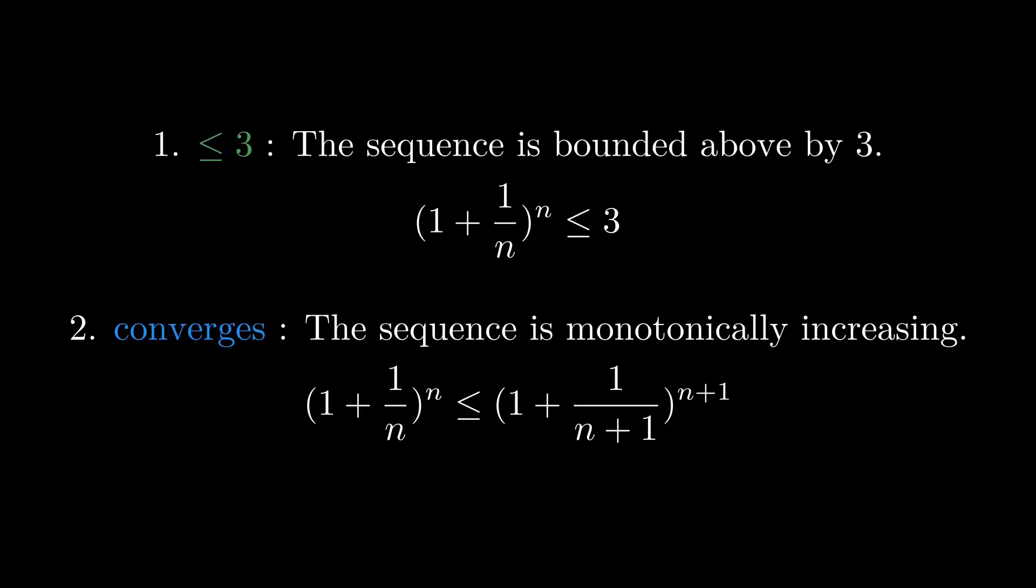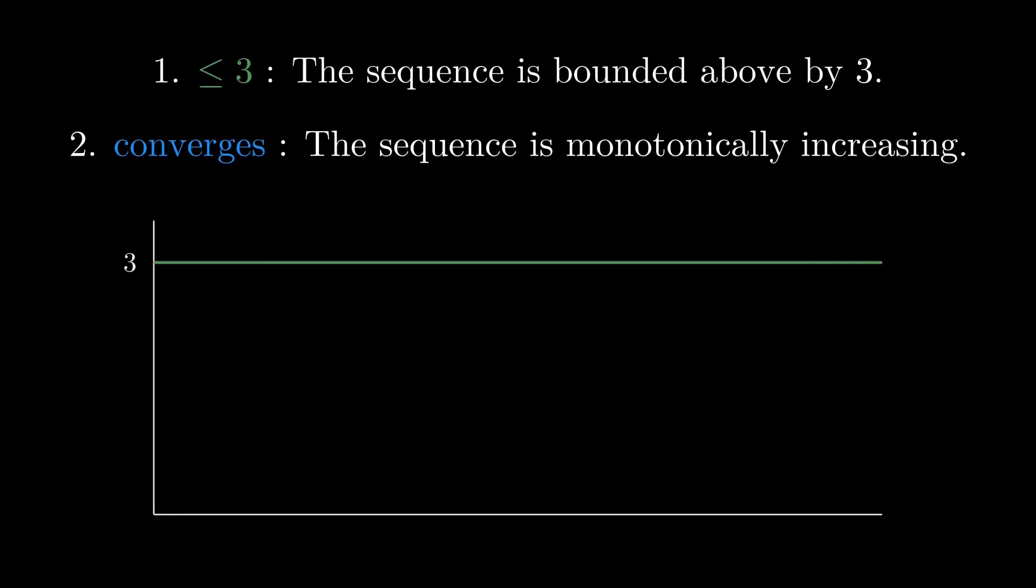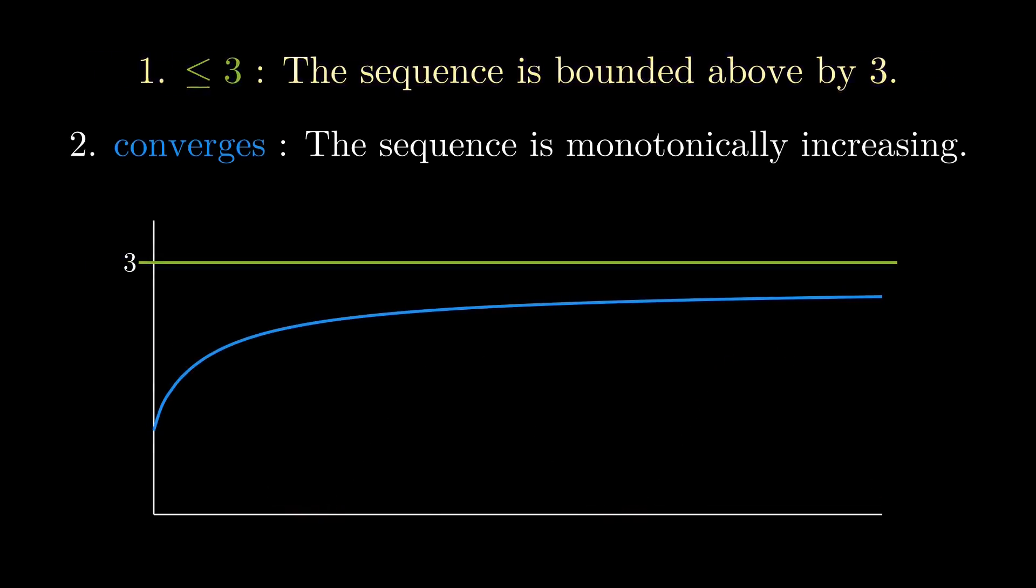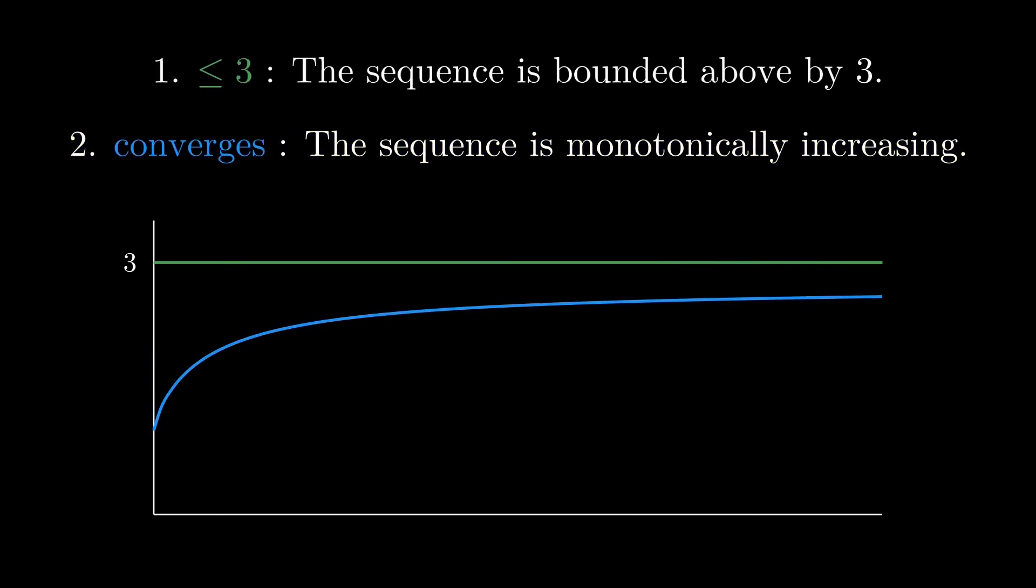You might wonder why we need that second point. Some functions like f(x) = sin(x) are bounded but never converge to any single value. If we can show that our sequence is both bounded and monotonic, then we know it converges. In other words, if this graph only goes up but can't pass this line, we know it must converge to something no higher than that line.